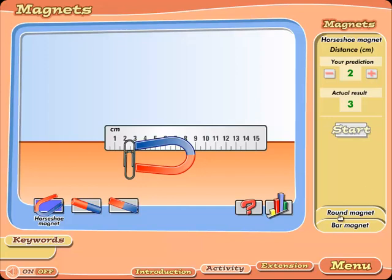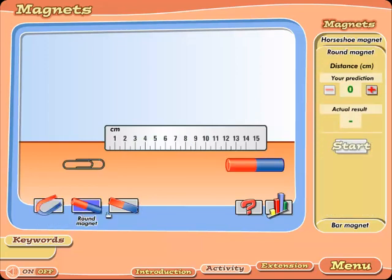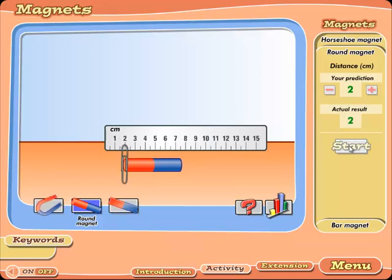Okay, let's then test the rounded magnet. Let's write our prediction. Maybe one centimeter. We'll make it two. Anything. Let's check. This is just a prediction. We are making the experiment now. Yes, two centimeters. My prediction was right.